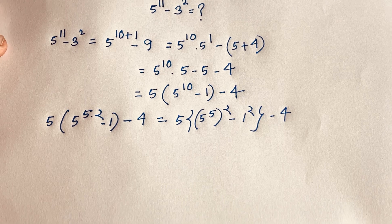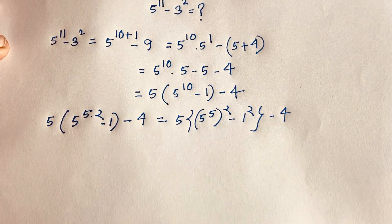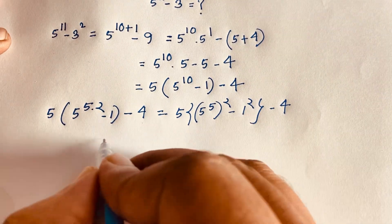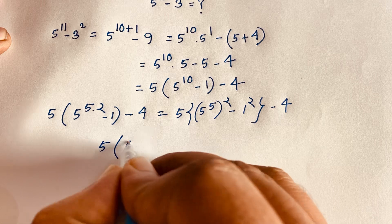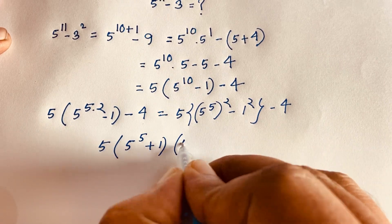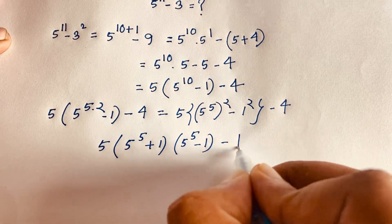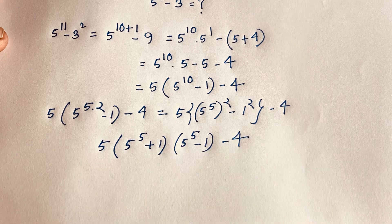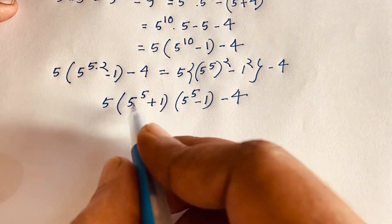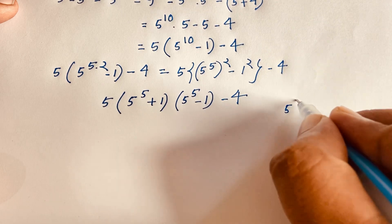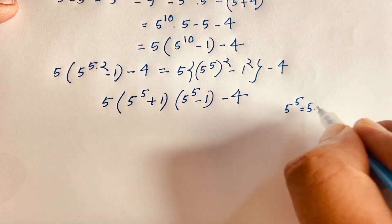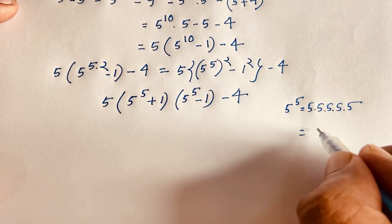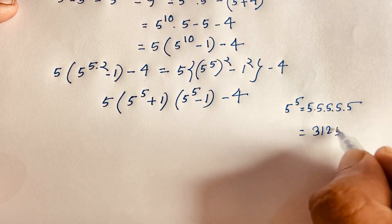We know the identity a squared minus b squared equals (a+b)(a-b). Applying this: 5 times (5 to the power 5 plus 1)(5 to the power 5 minus 1) minus 4. Now, 5 to the power 5 equals 5 times 5 times 5 times 5 times 5, which equals 3125.